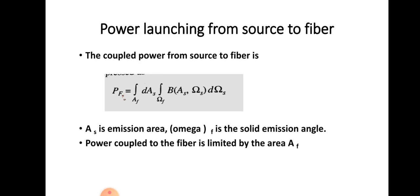Next we will discuss about power launching from the LED or laser source to the fiber. The equation for power from the source to the fiber is: PF = ∫∫(AF) dA · ∫(ΩF) B(AS, ωs) dωs, where PF is the power launched into the fiber, limited by the fiber area AF.